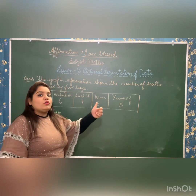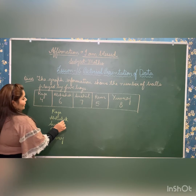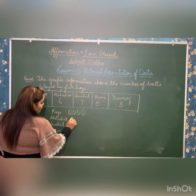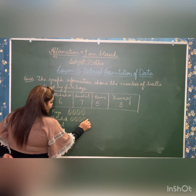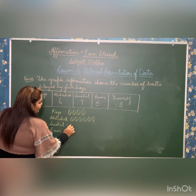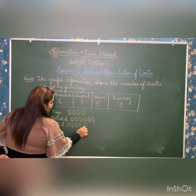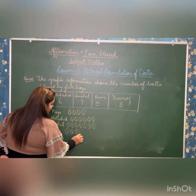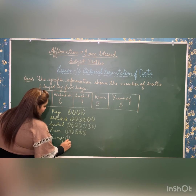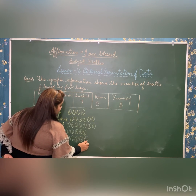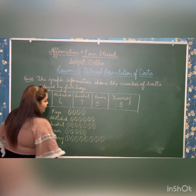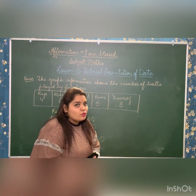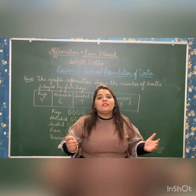Raja played four balls, so we draw four ball symbols. Abhishek played six, so we draw six symbols. Sushi played seven, Ram played five, and Yuvraj played eight. In this way we can draw the pictograph. I hope it's now clear to you all how to represent data using a pictograph. Thank you so much.